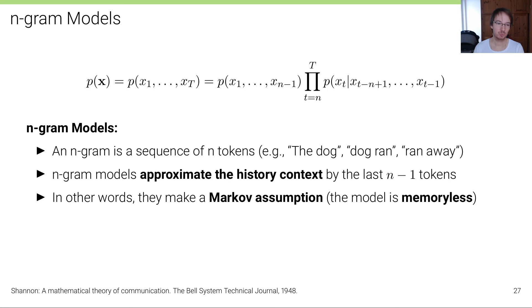And this is where n-grams come in. N-grams make an approximation - they shorten the context.